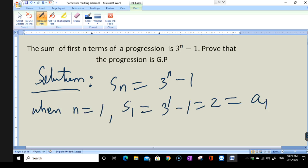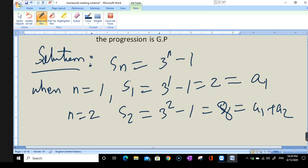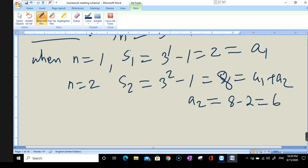When n = 2, S2 will be 3^2 - 1 = 8, and this equals a1 + a2. Because we know a1 is 2, it means a2 is 8 - 2 = 6.